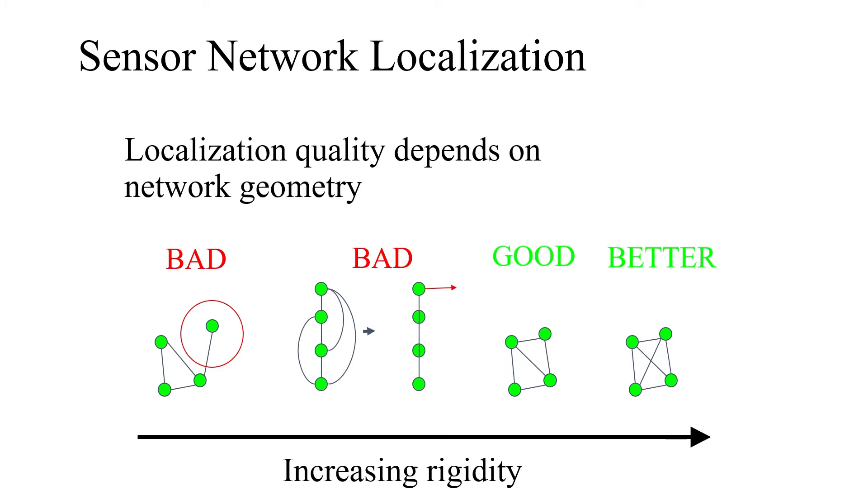However, a notable limitation in the use of sensor network localization lies in the fact that the localization quality is a function of the network geometry.